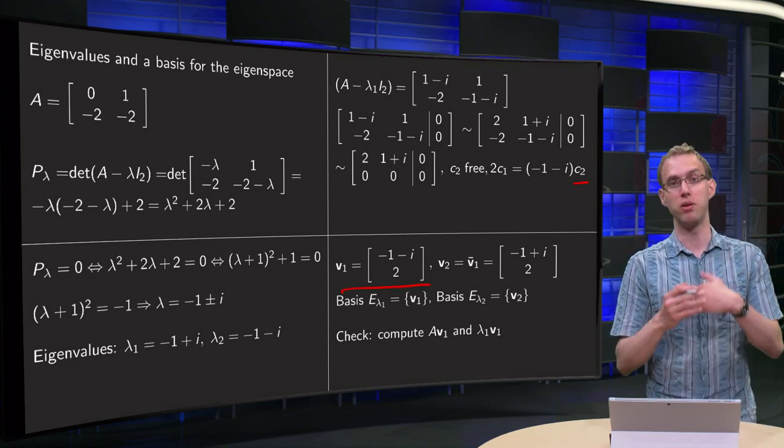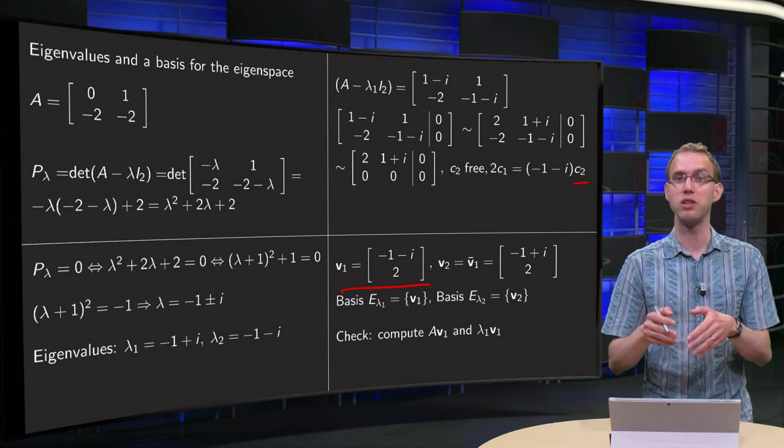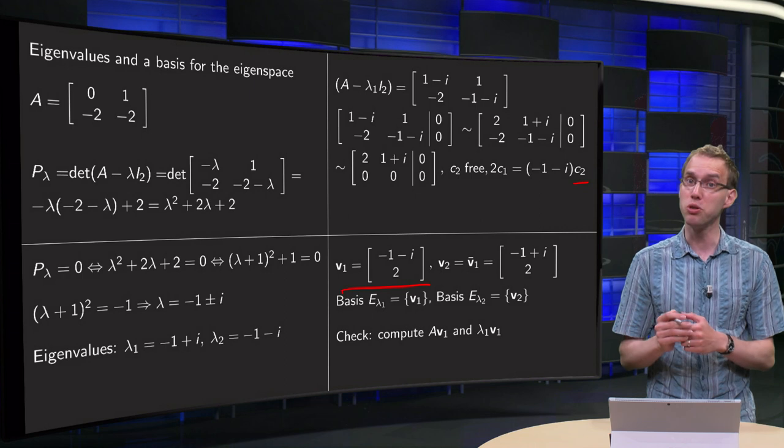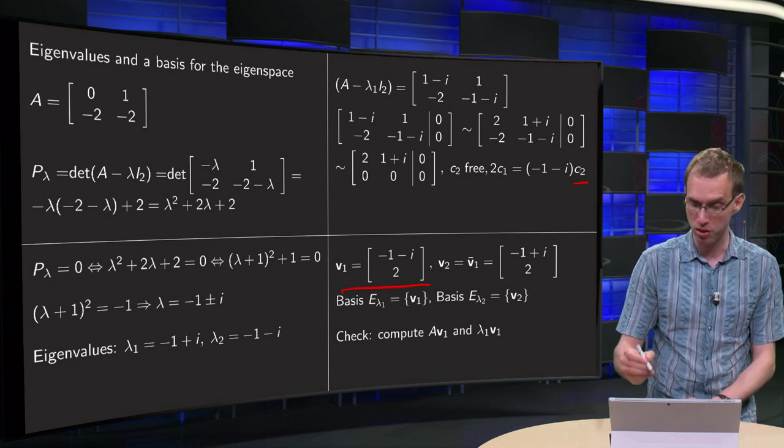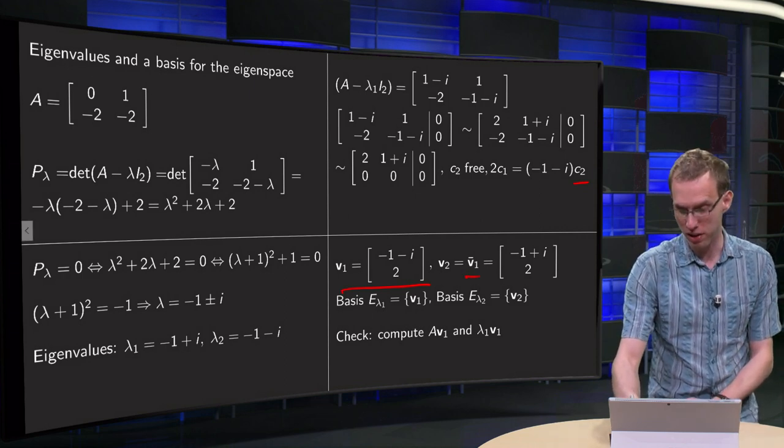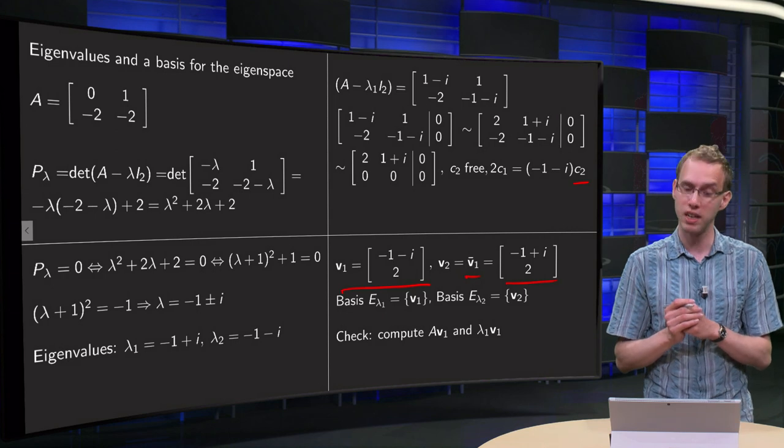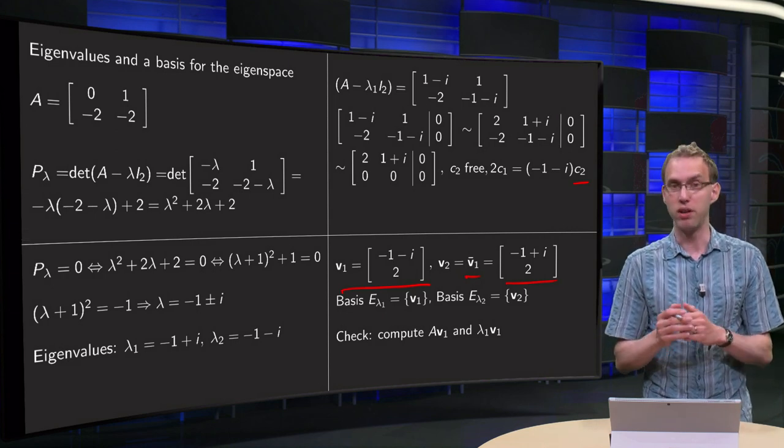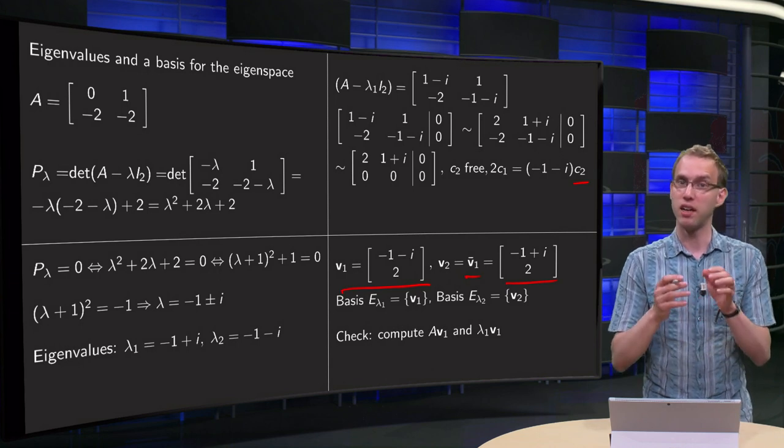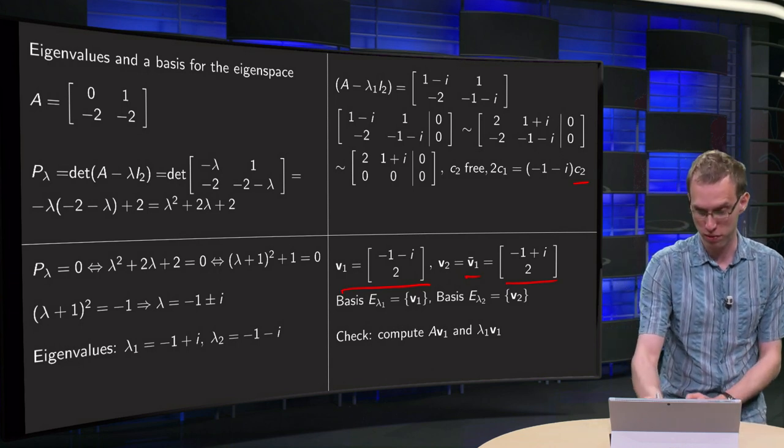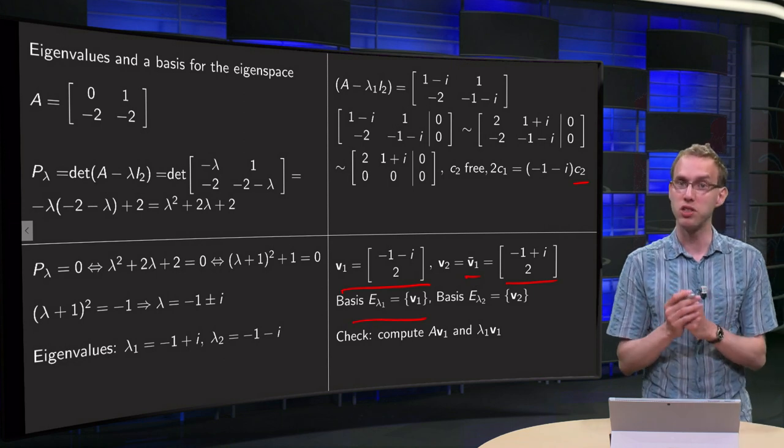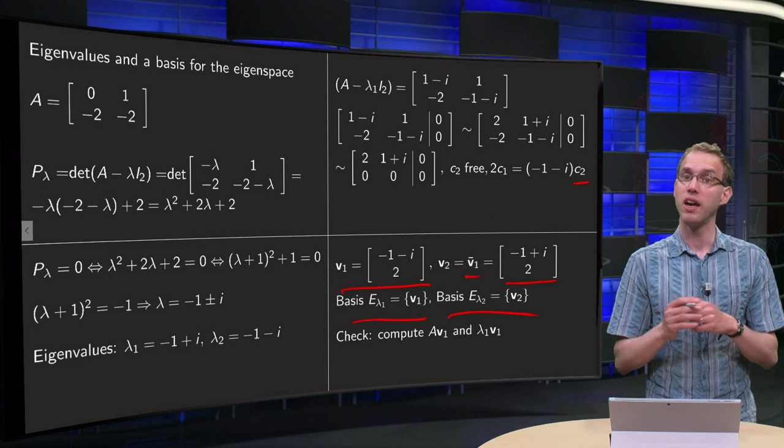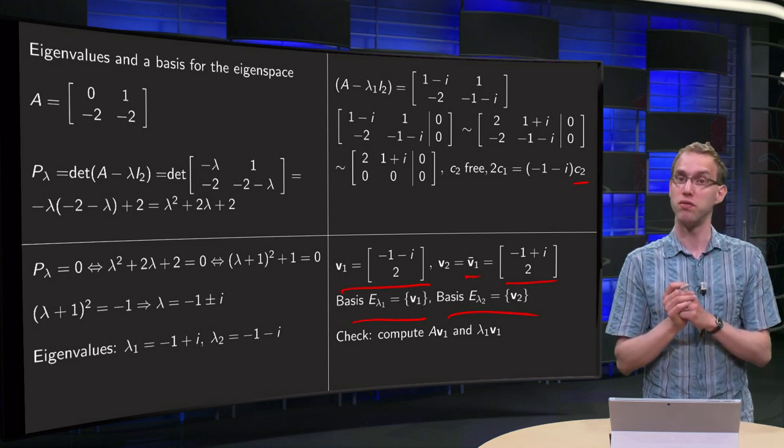And the second one, we could do A minus lambda 2 times I2 and then do the row reduction, but we can also use the fact that that one has to be the complex conjugate of the first one. So we can find our second eigenvector immediately, and we can write down the full eigenspace. The eigenspace of lambda 1 is the span of v1, and the basis for that is the set consisting of v1. The basis of the eigenspace pertaining to lambda 2 is the set of just v2.